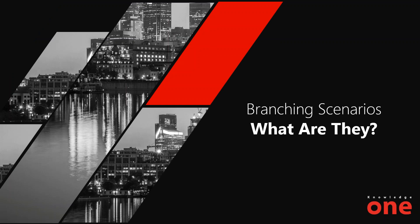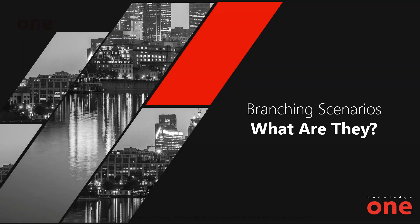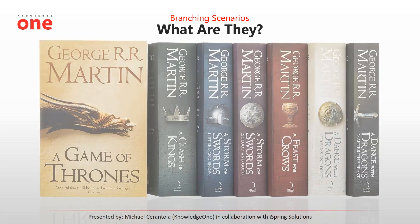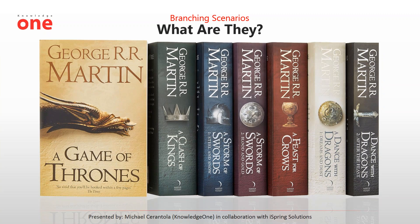For those new to branching scenarios, a good way I describe them is by comparing e-learning to books. Most e-learning is like a book series — for example, Game of Thrones. You start in your first book, your first module, progress through, and learn something towards the end. If you start on Module 5 and go back to Module 4, you'd be lost. So everyone goes through the linear approach.